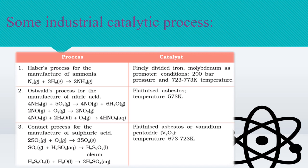There are some industrial catalytic processes that take place in the presence of a catalyst. For example, Haber's process for the manufacture of ammonia. Different chemical reactions take place in the presence of different catalysts; the same catalyst cannot be utilized for all reactions. In Haber's process: N₂(g) + 3H₂(g) → 2NH₃, in the presence of iron as a catalyst and molybdenum as a promoter. Promoters help the reaction to take place faster.